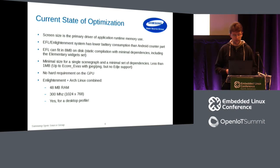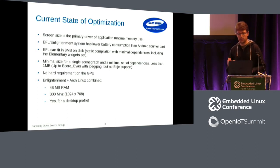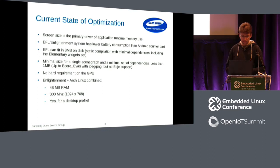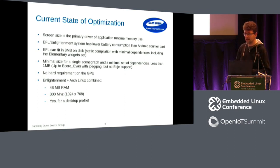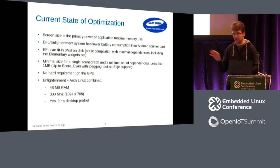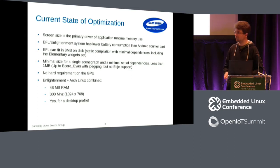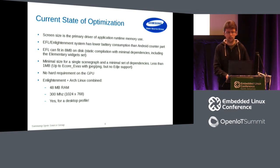We fit in eight megabytes. You can actually have the scene graph, the main loop, and a minimal set of graphic primitives for one megabyte, but that's not a full toolkit. There is no GPU requirement, and you can actually run a desktop in 48 megabytes of RAM at 300 MHz with one core. You can run Enlightenment in that context — you'll only be able to run one application, but it does work as a desktop profile in software with no GPU.